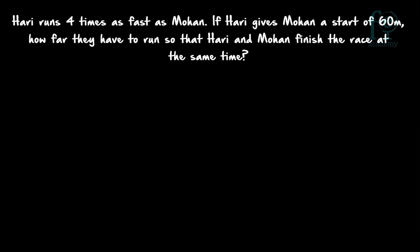Second question: Hadi runs 4 times as fast as Mohan. If Hadi gives Mohan a start of 60 meters, how far do they have to run so that Hadi and Mohan finish the race at the same time? The ratio of speeds of Hadi to Mohan is 4 is to 1, since Hadi runs 4 times as fast. We do not know the total race distance — let it be x. Hadi will be running x meters, and Mohan will be running only x minus 60 meters, since Hadi is giving Mohan a start of 60 meters. We are asked to find x.